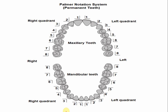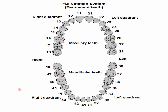In the Palmer notation system, the number of the mandibular central incisors is 1 and 1. The only difference from the maxillary central incisor is the symbol — these two symbols indicate the mandibular arch, specifically the left side and the right side. In the FDI notation system, also known as the Federation Dentaire Internationale notation system...